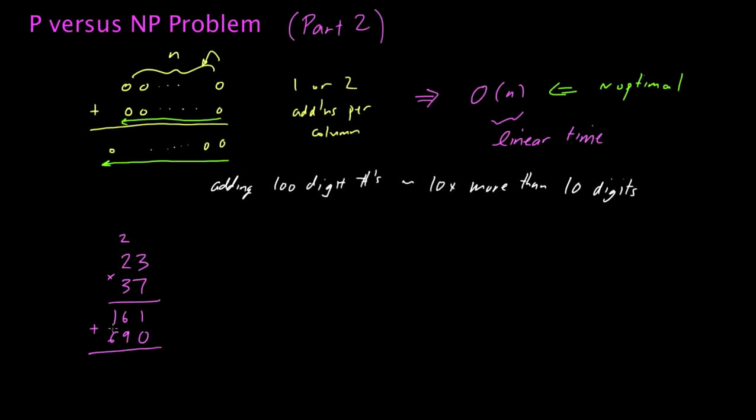Then I put a 0 here in the ones place, and I repeat the same procedure with 3. So I effectively multiply 3 by 23, which involves first multiplying 3 by 3 to get 9, then 3 by 2 to get 6. Now I have these two partial sums, 161 and 690. When I add them together, I get 851. What I've really done effectively is I've cross-multiplied. I've basically taken each digit and multiplied it with every other digit.